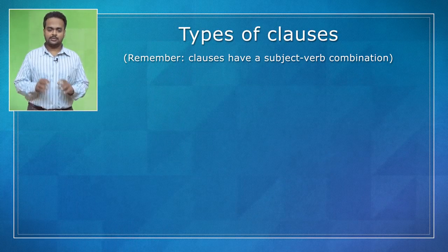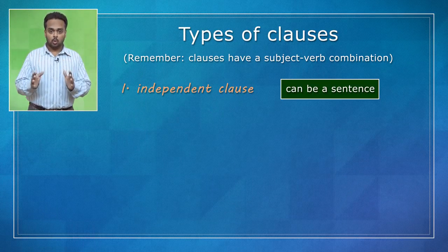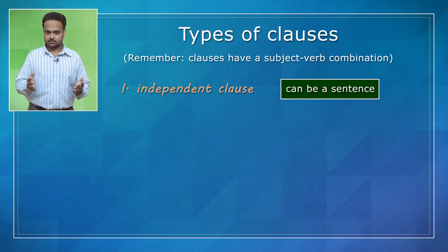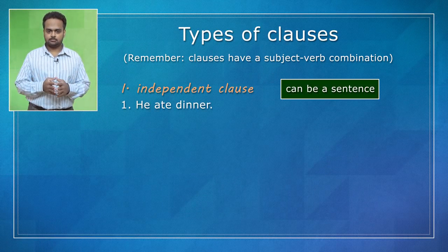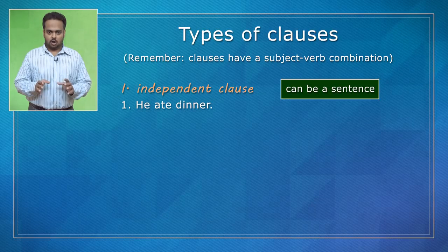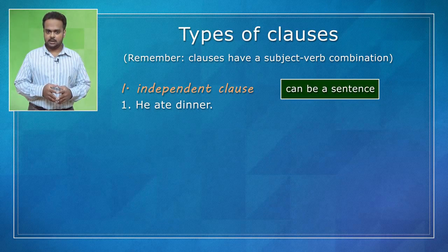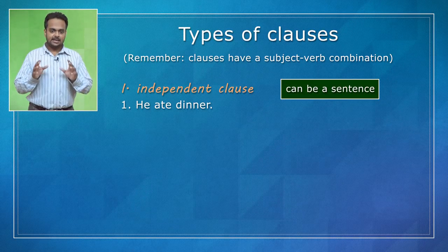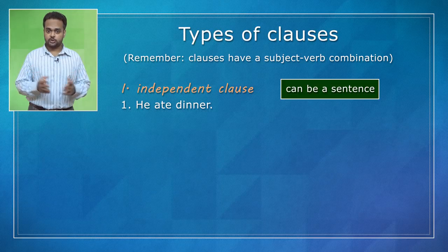Let's start with the independent clause. This is simply a clause that can stand alone as a sentence. For example, 'he ate dinner.' This is a clause because it has a subject, 'he,' and a verb, 'ate,' the past tense of 'eat.' And it's independent because it can be a sentence on its own.